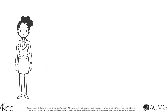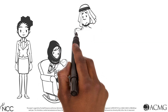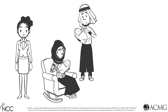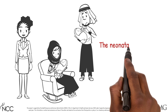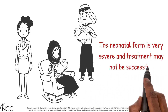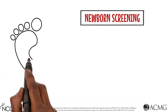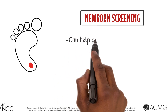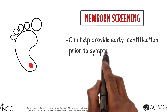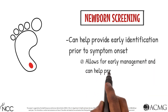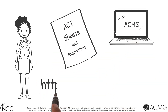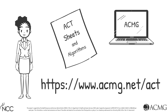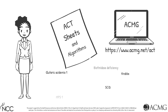Before we end today's session, let's have a quick review. First, CPT2 and CACT deficiency are serious conditions and identification of affected individuals is essential for the administration of early treatment. Although management is available, the neonatal form is very severe and treatment may not be successful. Second, newborn screening may identify CPT2 or CACT deficiency prior to symptom onset, allowing for earlier management and helping to prevent symptoms and complications. Third, Act Sheets are freely available on the ACMG website to review in the event of a screen-positive result, and are available for many other conditions identified through newborn screening.